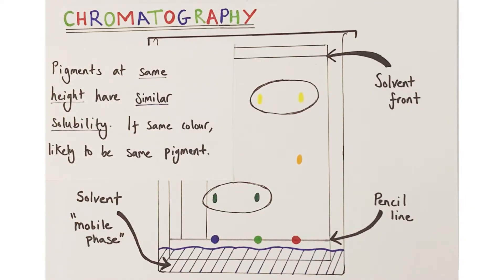Now, no doubt you'll also have noticed that for the blue and green dyes, they both seem to have the same pigment, this green pigment, in them. And for the green and red dyes, they seem to both have this yellow pigment, and that's really important. Pigments at the same height are the same pigment.